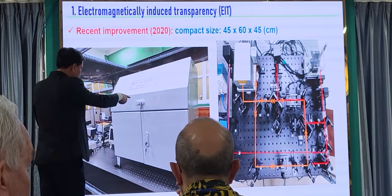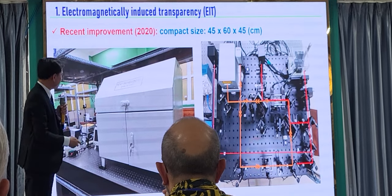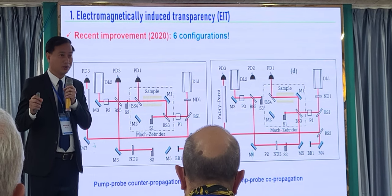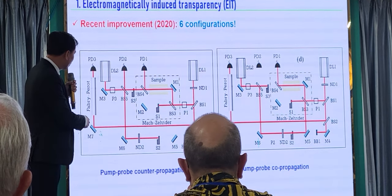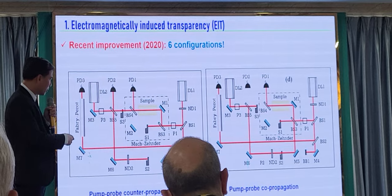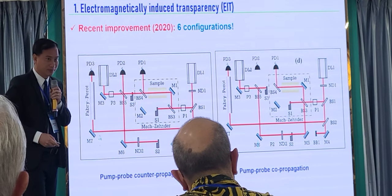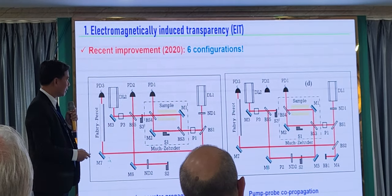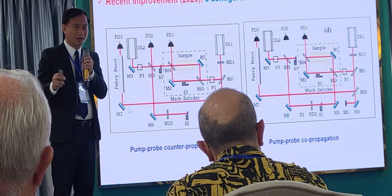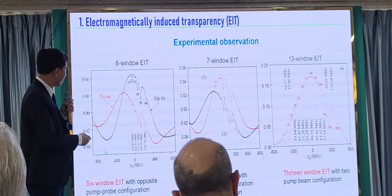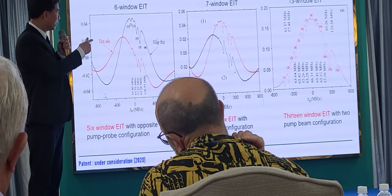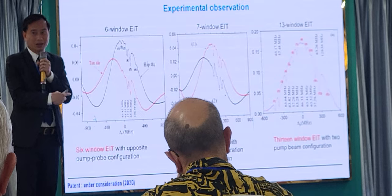Here is the optical setup you can see from inside. We developed this setup into six different configurations to excite different atomic levels. Here are some examples of our optical schemes for each configuration — with pump-probe counter-propagation and pump-probe co-propagation. With this system, we can easily manage the beam by changing only some tuning inside the system. This is our observation: not only two or three EIT windows, but extending to six, seven, and even 30 windows using our system.